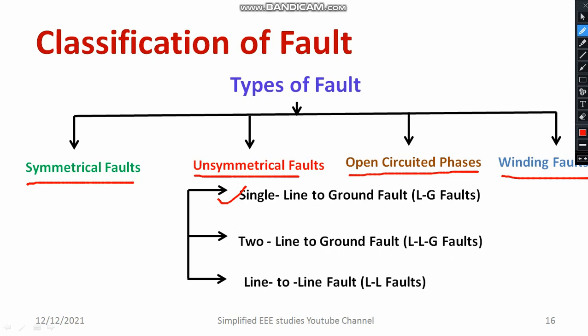The second sub-classification of unsymmetrical fault is two line to ground fault, also known as LLG fault or double LG fault. The third sub-classification of unsymmetrical fault is line to line fault. So these are the sub-classifications of unsymmetrical fault.